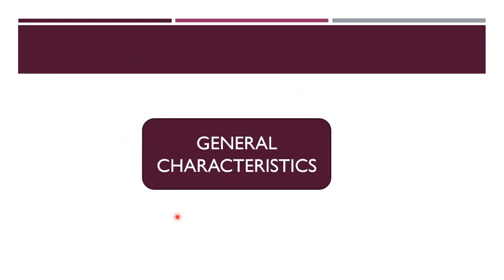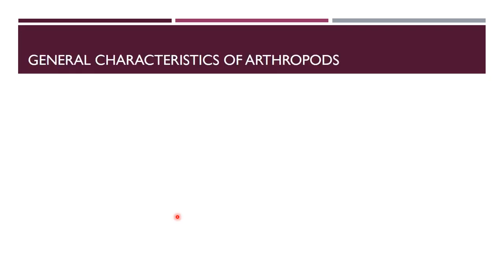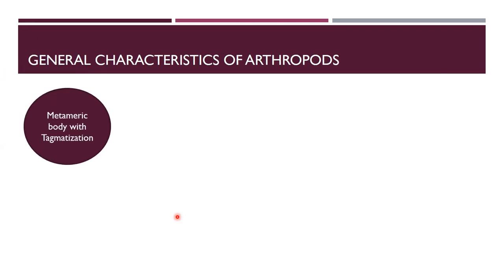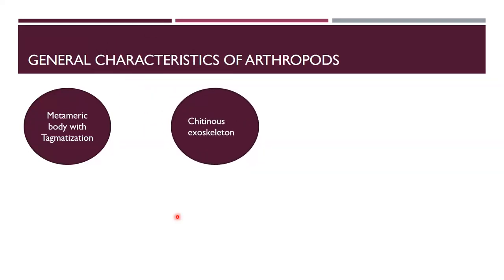First of all, we'll have a look at the general characteristics of arthropods. The first one is metameric body with tagmatization — their body is divided into segments, and every segment has a specialization, which we call tagmatization. Then they have an exoskeleton made of chitin.